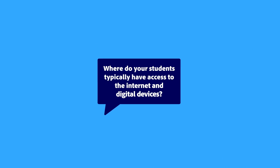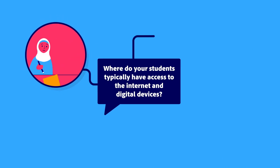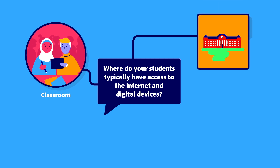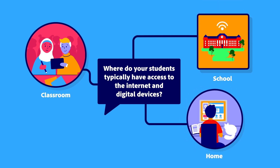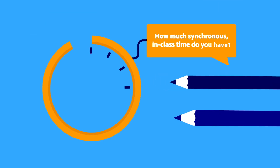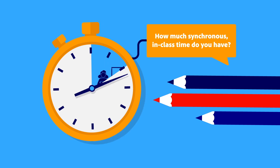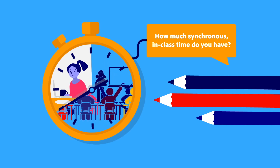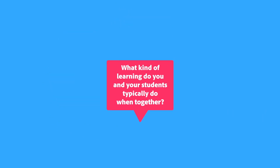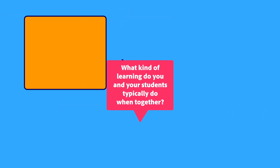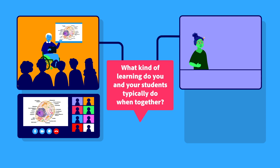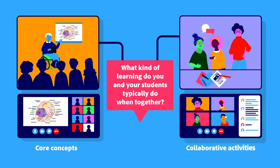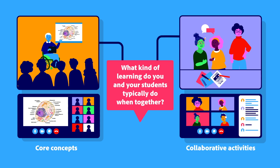Where do your students typically have access to the internet and digital devices — in your classroom, at your school or campus, or at home? How much synchronous in-class time do you have? How much time do your students spend doing independent work or homework? What kind of learning do you and your students typically do when together?